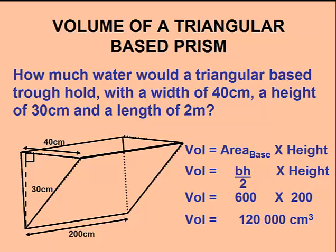A cubic centimeter is also the same as 1 milliliter. If we have 120,000 milliliters and divide it by 1,000, that would give us 120 liters. And that's how much water this trough would hold.